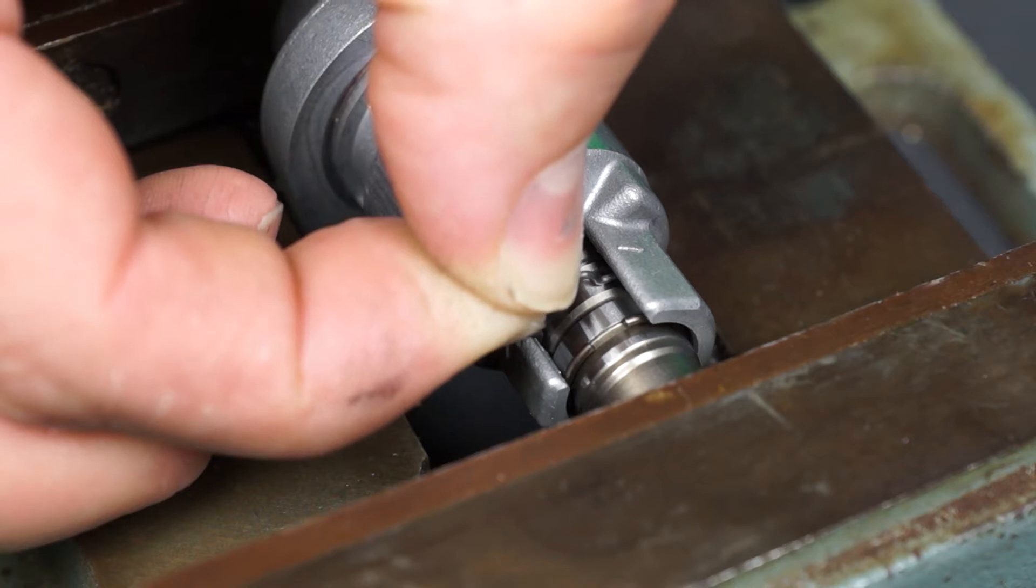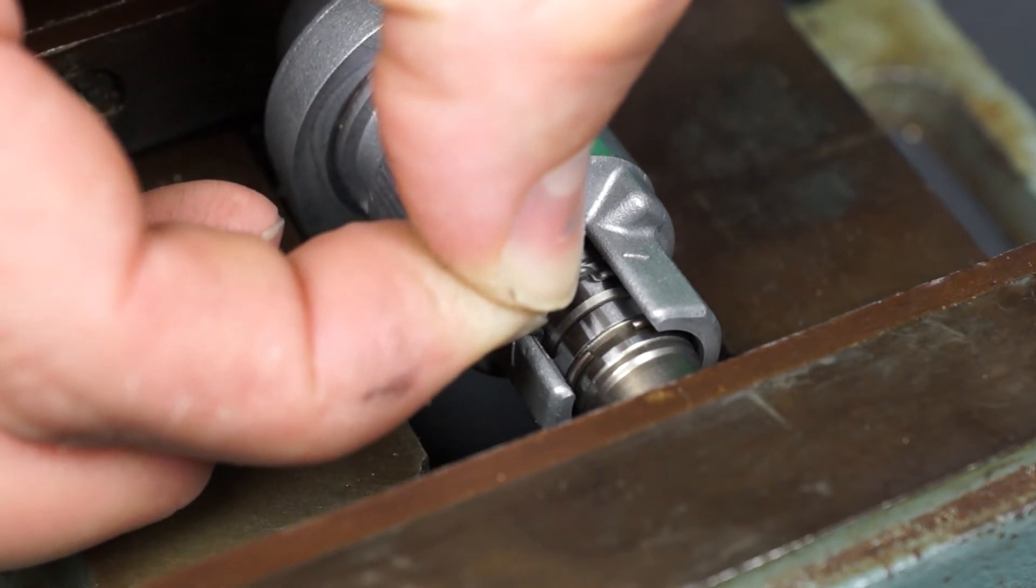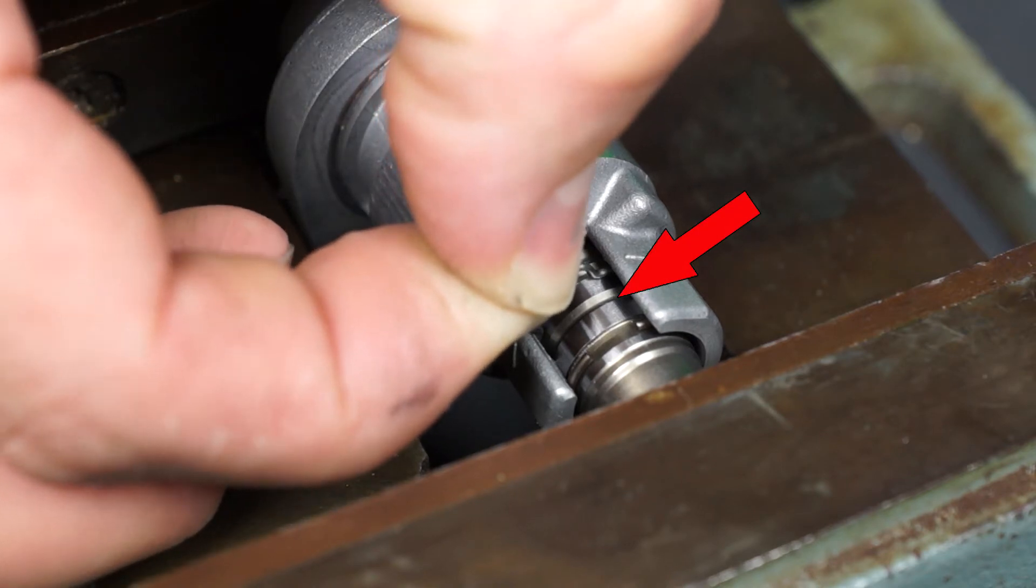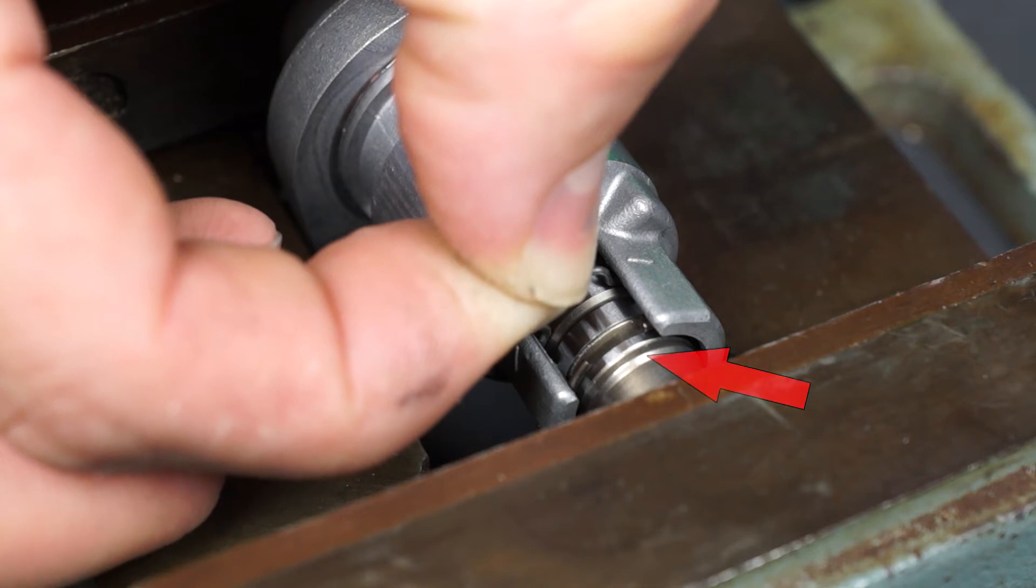As you continue to push the rod into the tensioner housing, keep the clip squeezed to allow it to pass over the grooves in the rod. Finally, position the clip in the last open groove. Continue to squeeze the clip and compress the tensioner rod a little further into the housing. Go very slowly.